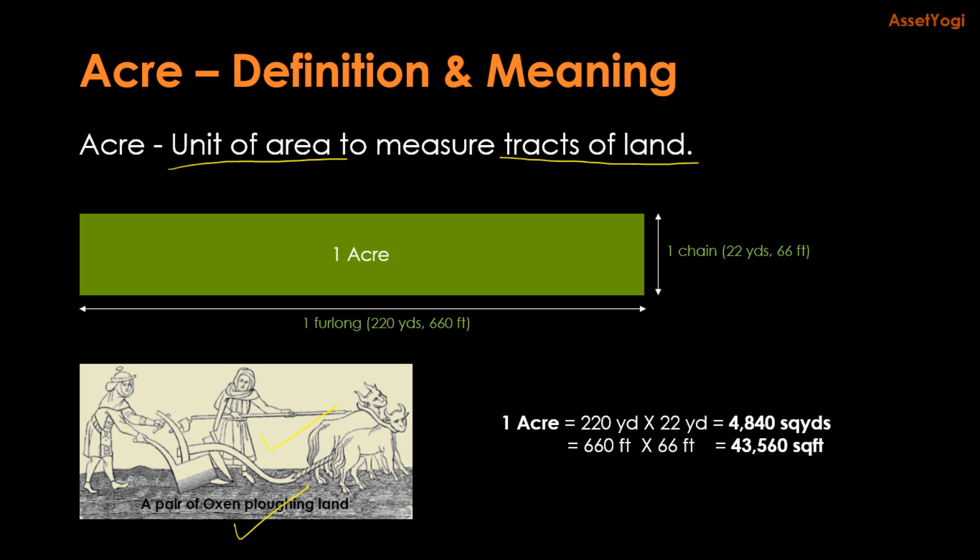Traditional acres were long and narrow because it was very difficult to turn the plow. A furlong, which also means a furrow length, was the distance a pair of oxen could plow without resting.